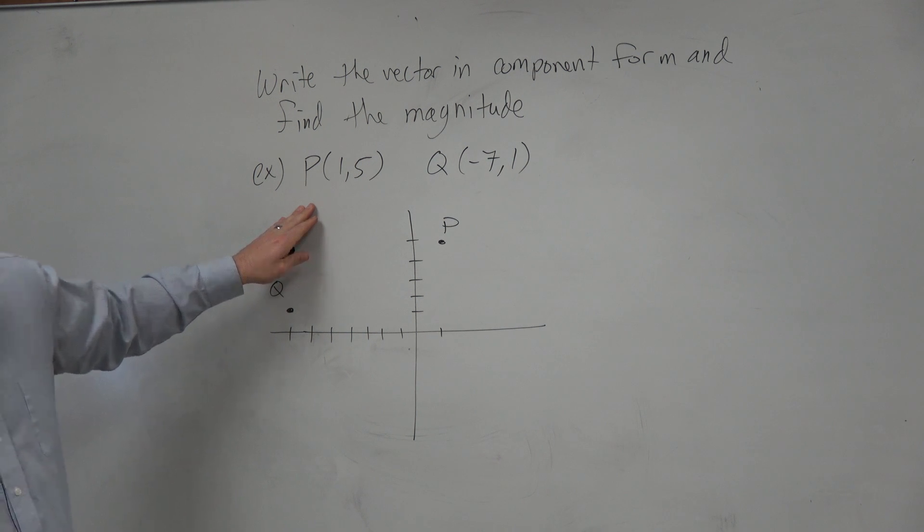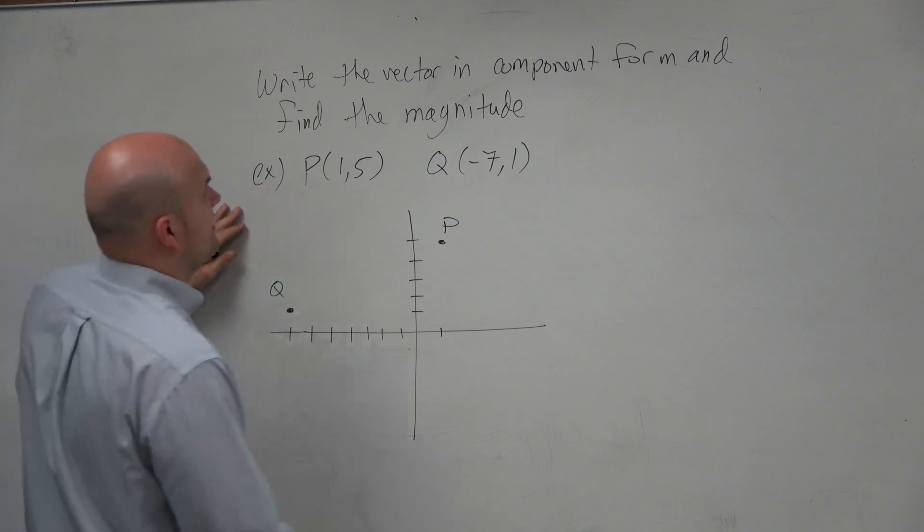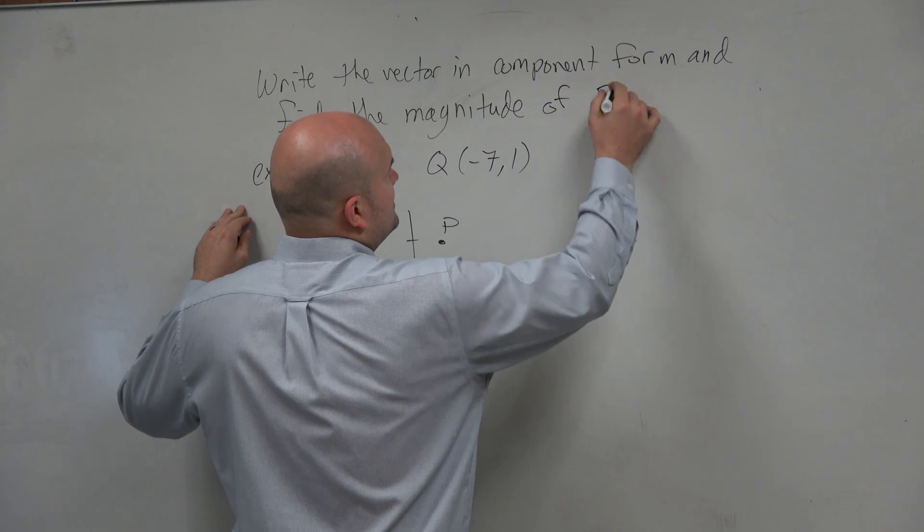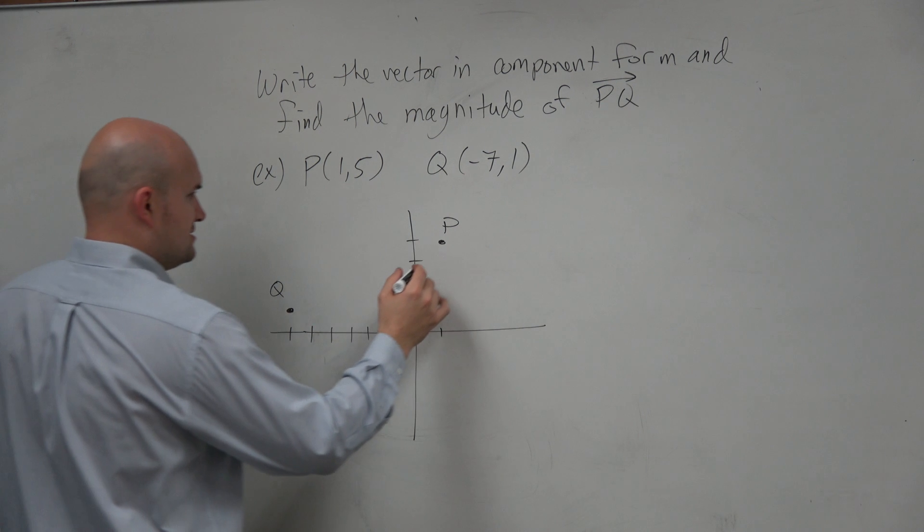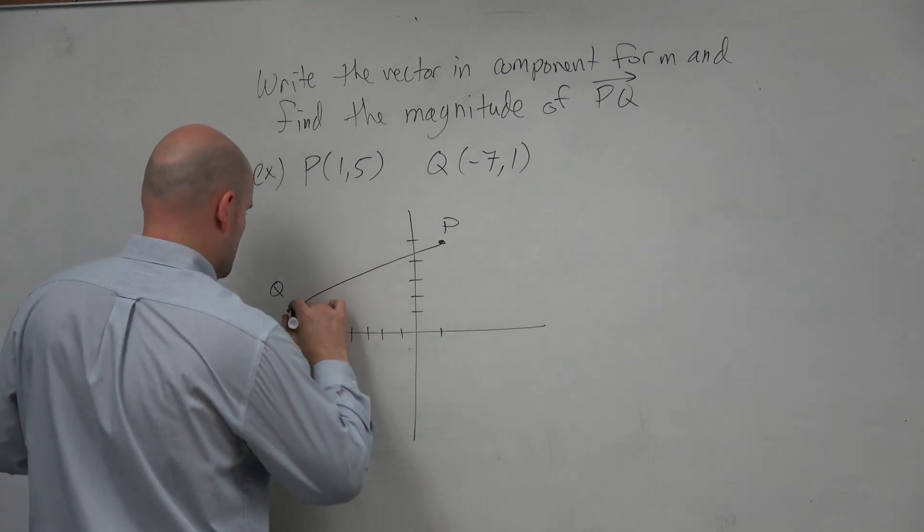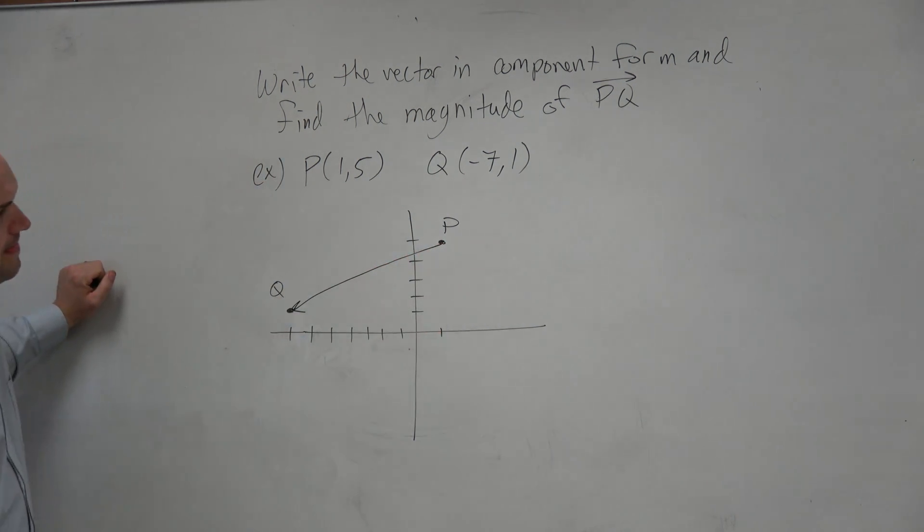So write the component form and find the magnitude of, let's just do PQ. Let's keep it consistent. So we want to find the component form here of this.